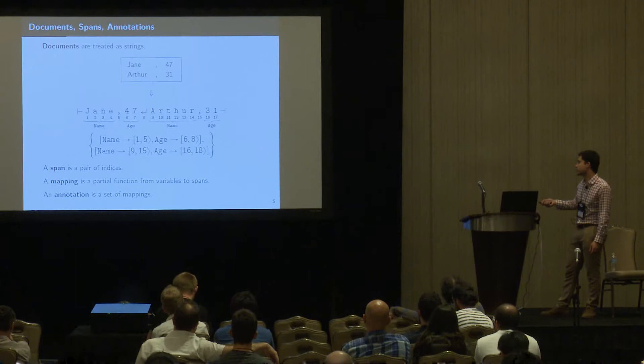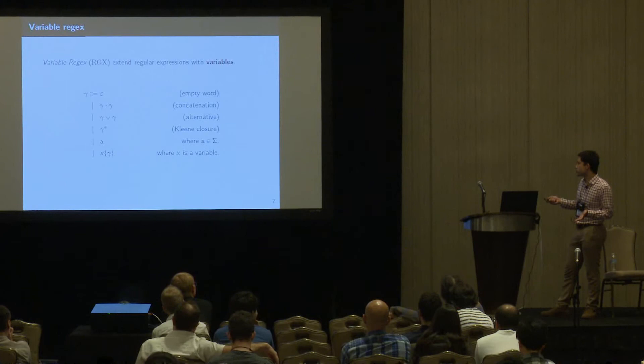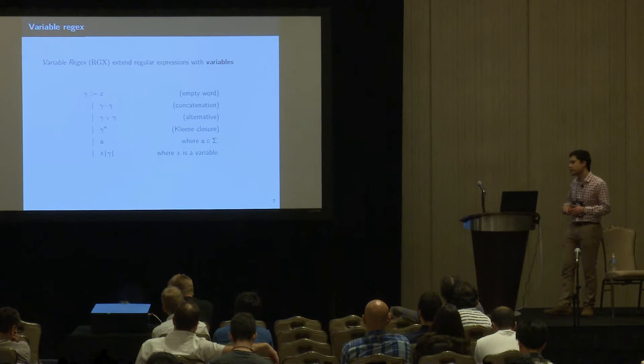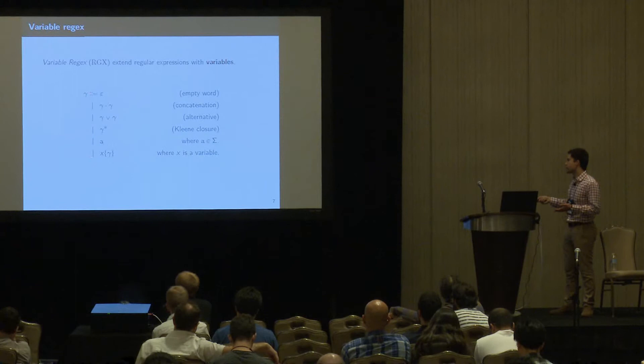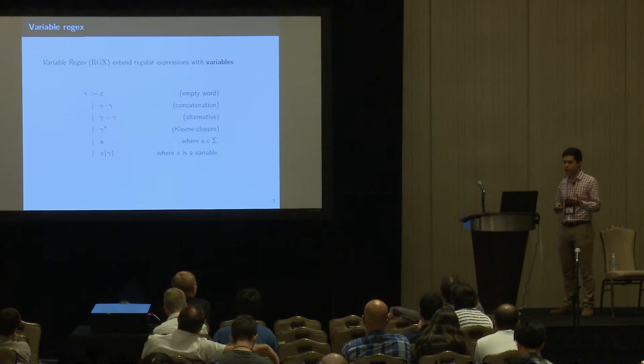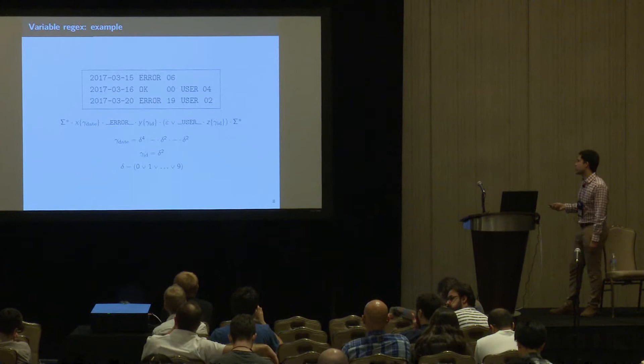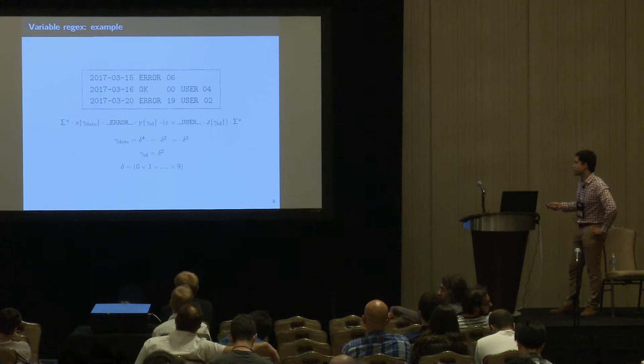The generalization comes from the fact that mappings may be partial. A regex formula, or variable regex, is simply a regular expression with variables — we have the usual constructs but add variables that might capture other variable regex inside them.